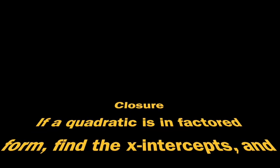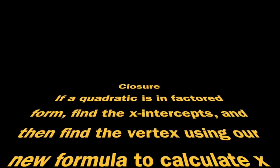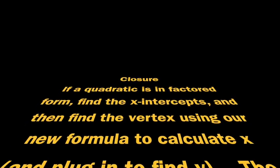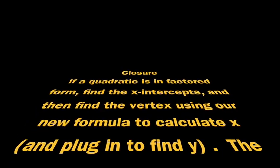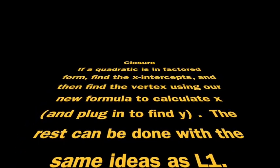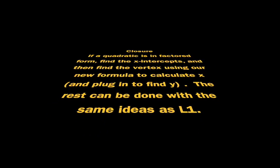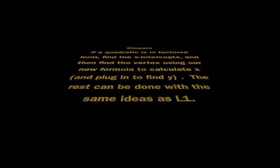In this lesson, we learned that if a quadratic is in factored form, we can find the x-intercepts easily, and then find the vertex using a new formula. From there, we follow almost the same process as we did for standard form. If you came away with anything else, write that down now — otherwise we'll see you in the next lesson.